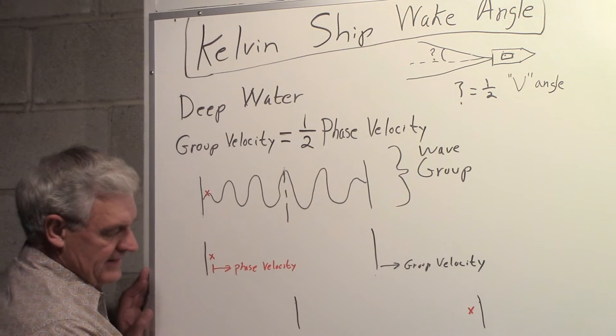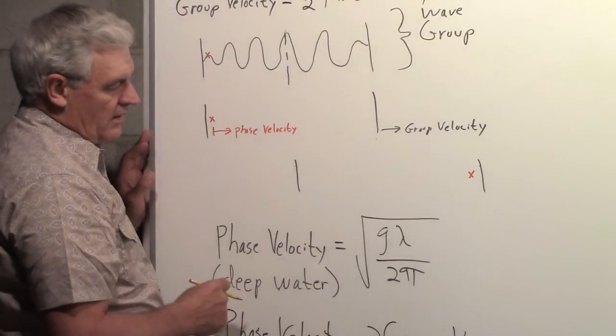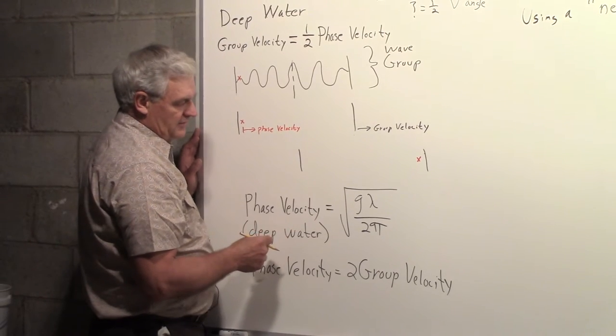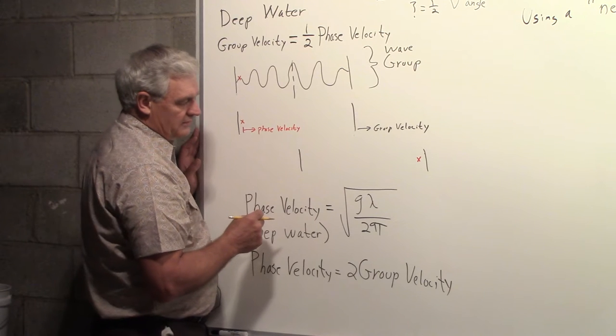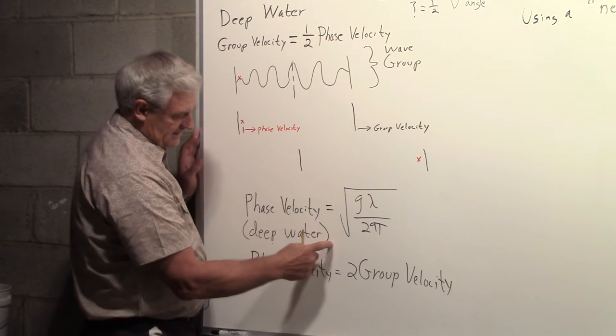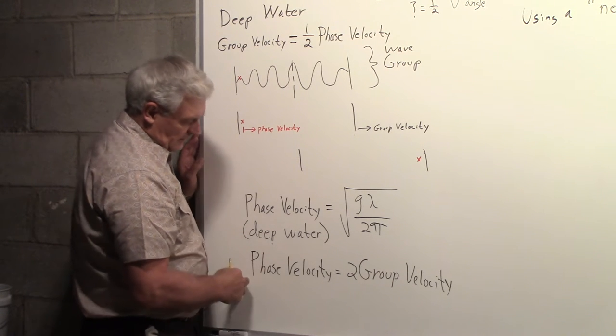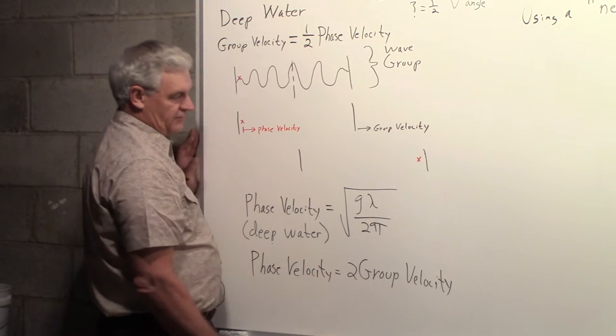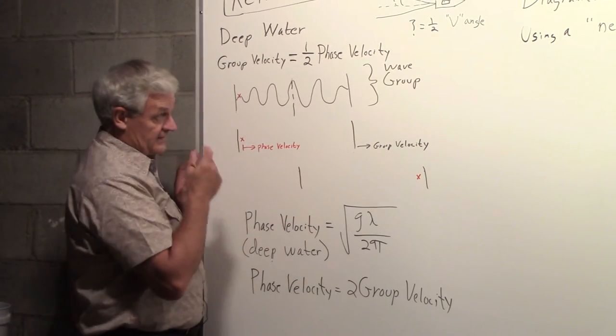The phase velocity is given by this expression: the square root of the acceleration due to gravity, roughly 9.8 meters per second squared, times the wavelength of the water wave, divided by 2π. And again, this is deep water. I just want to put down here that the phase velocity is two times the group velocity. I'm saying the same thing.